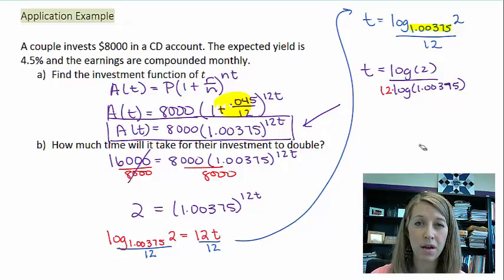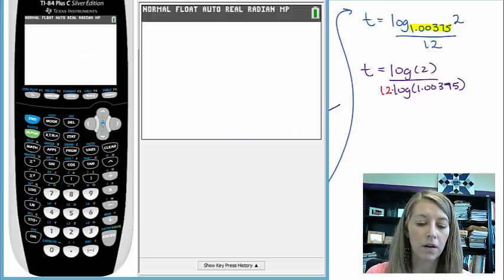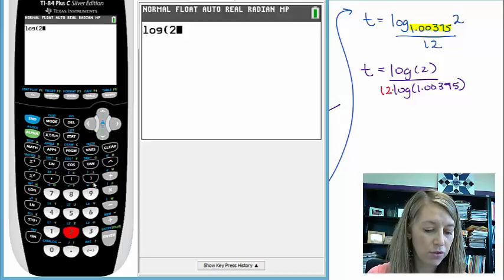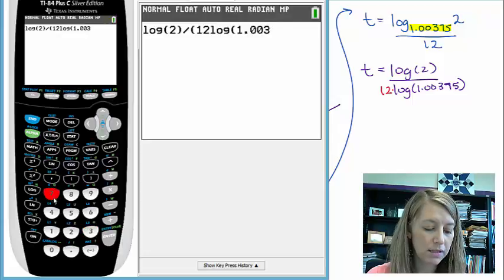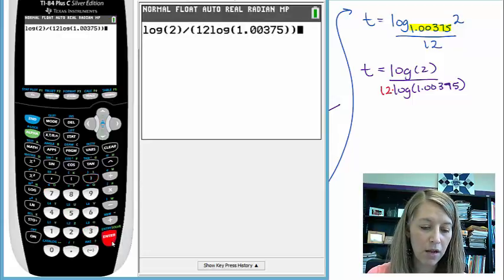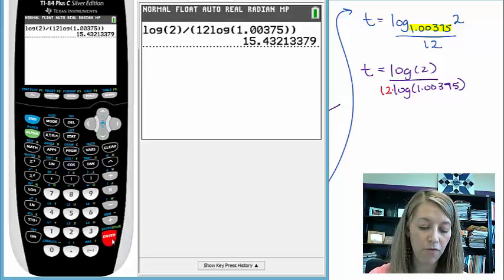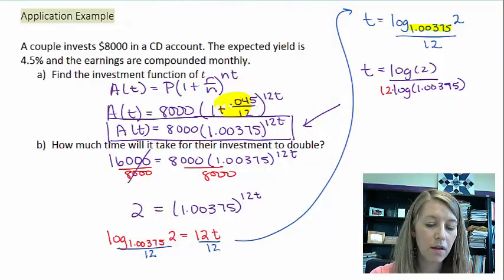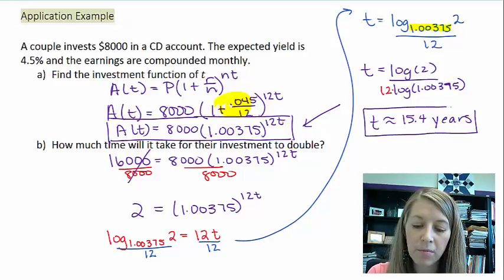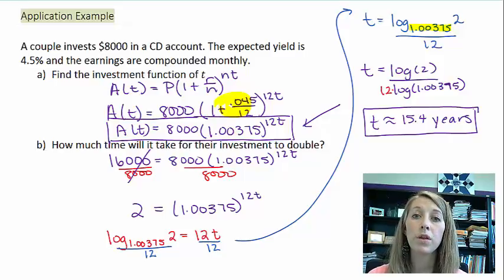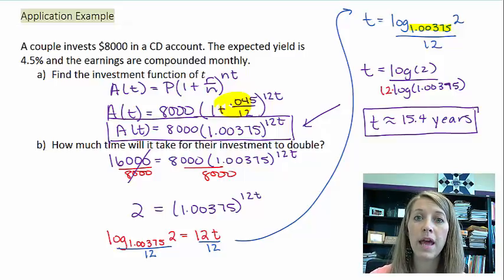Now I have something I can type into my calculator. Log of 2 divided by, I'm going to put the whole denominator in parentheses so I know it's divided by the whole thing, 12 times log of 1.00375. That gives me that t is approximately equal to 15.43. So t is approximately 15.4 years. It's going to take them a little under 15.5 years for their investment to double with these qualifications, compounded monthly at 4.5%. Now you see an actual application of why we need exponential and logarithmic functions, and why we need to figure out how to solve their equations.